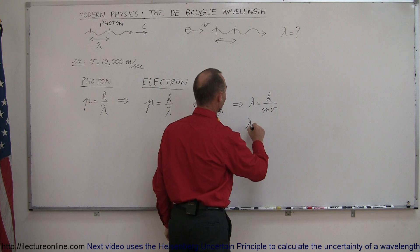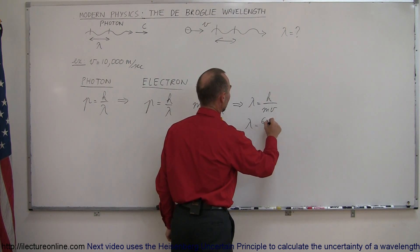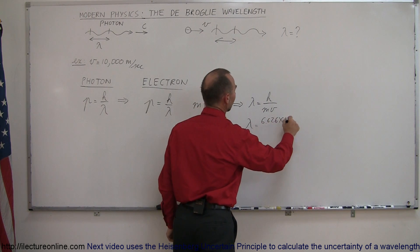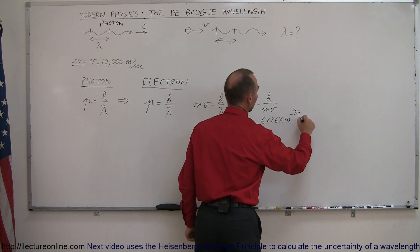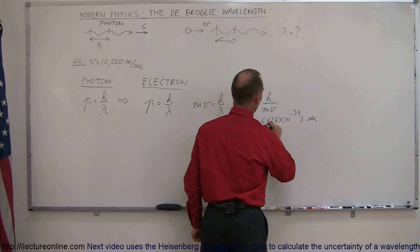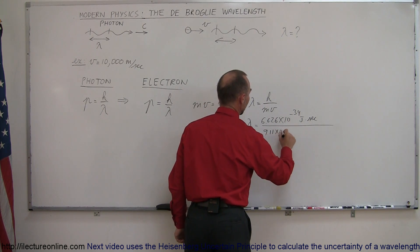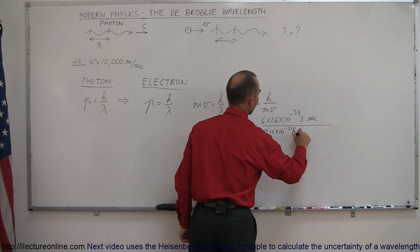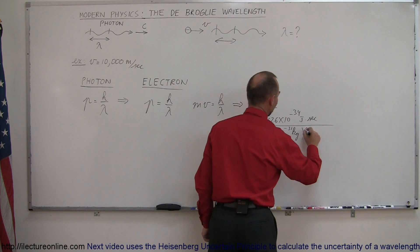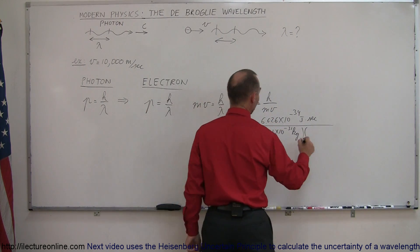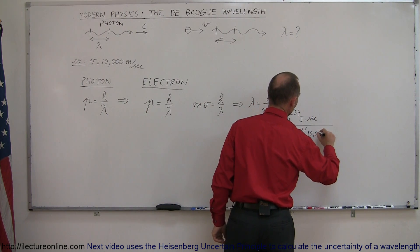So we can then say that the wavelength lambda is equal to Planck's constant, 6.626 times 10 to the minus 34 joules times seconds. We divide that by the mass of an electron, which is 9.11 times 10 to the minus 31 kilograms, and we multiply that times the velocity, which in our example is 10,000 meters per second.